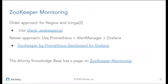Speaking of monitoring, there are a number of approaches and it's hard to give a one-size-fits-all answer. Some people use things like Nagios and older tools. There's a routine called check_zookeeper.pl — in the slides, this is linked to the project. The newer approach we tend to see is people using Prometheus, Alert Manager, and Grafana. There's actually a Grafana dashboard available from Grafana Labs that you can use. You can check out the knowledge base, which has a page on ZooKeeper monitoring with a bunch of ideas about how to do this.